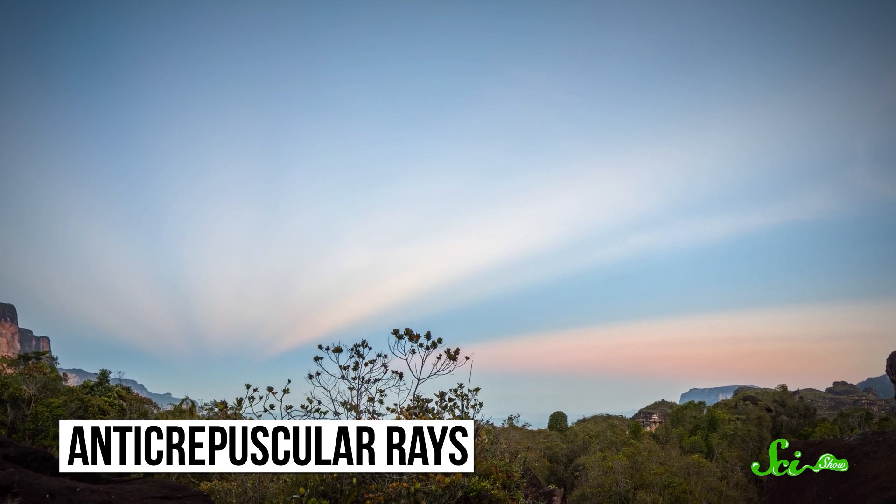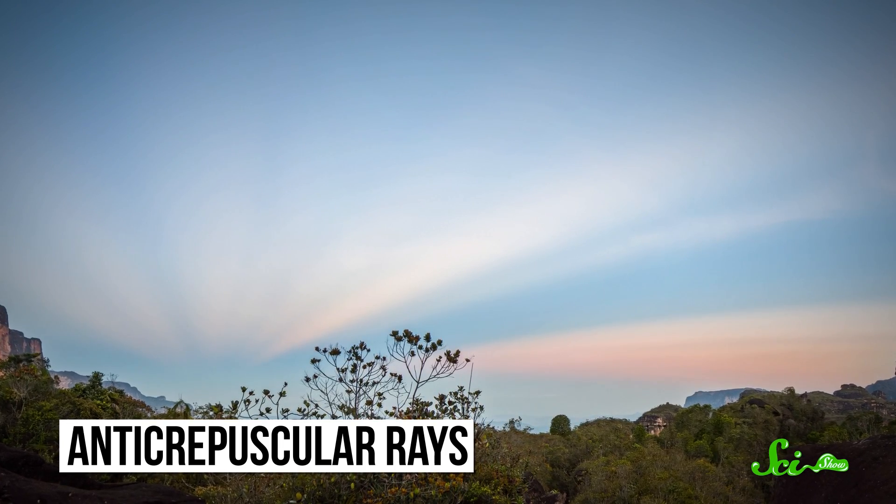Like all crepuscular rays, they look like they're radiating out from the sun, like a bunch of lines coming from a single point. But the ones right above you will look parallel. And the rays going behind you, directly opposite where the sun is, all meet again, where they are called anti-crepuscular rays. And they look like they're radiating out from some invisible sun on the darker side of the horizon.